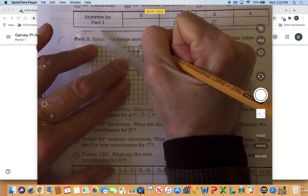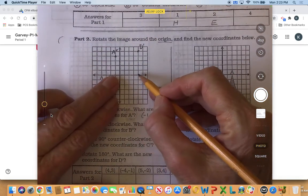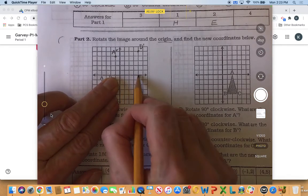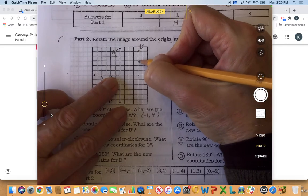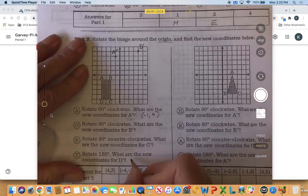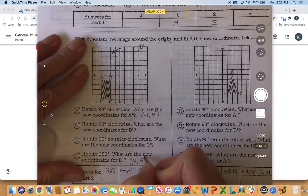And so now I just need to find what the coordinates are. So the x coordinate is 1, 2, 3, 4, and the y coordinate is 1, 2, 3, 4, 5. So those coordinates will be a positive 4 for the x and a positive 5 for the y.